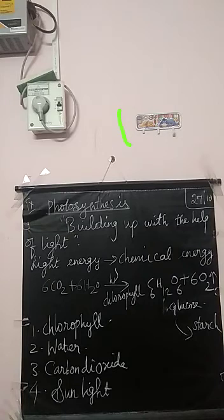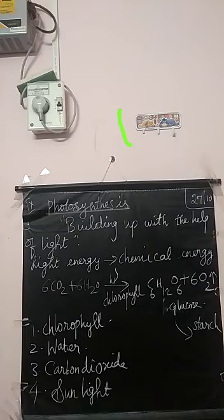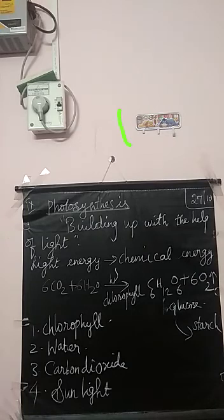In the photosynthesis process, light energy is converted into chemical energy. Green plants have the pigment chlorophyll, and green plants can prepare their own food by the process of photosynthesis. Green plants are autotrophic in nature — auto means they can prepare their own food — so green plants are autotrophic and can prepare their own food by the process of photosynthesis.